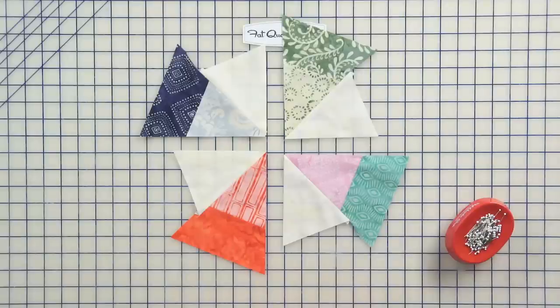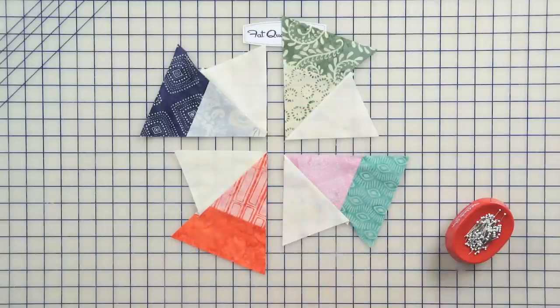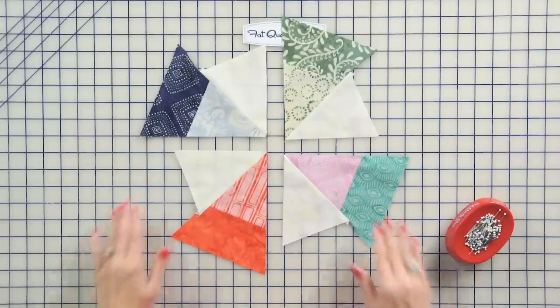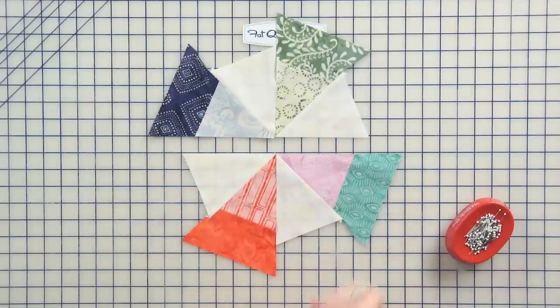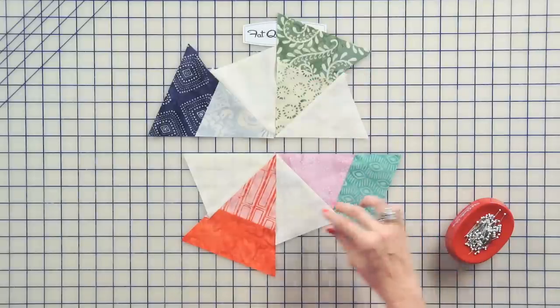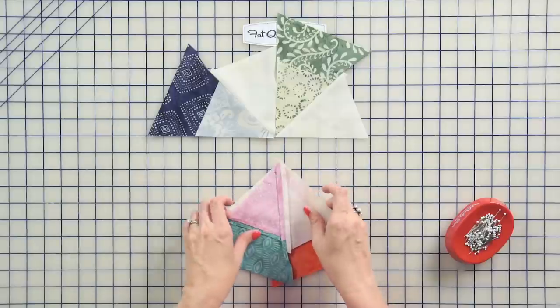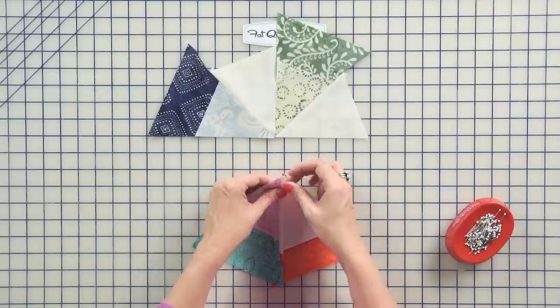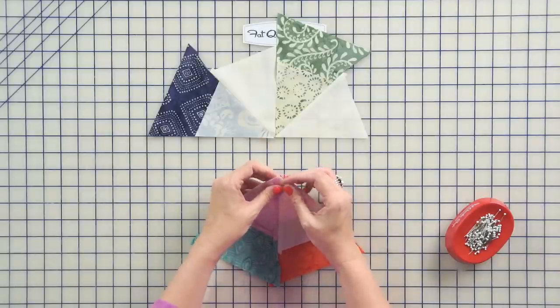For each of the blocks you're using, you're gonna have four of these units. And you're just gonna make sure you like your scrappy placement. And then we're going to be sewing half units together. So you're gonna put these two together and you're gonna make one and one. To do that, you're gonna put right sides together.